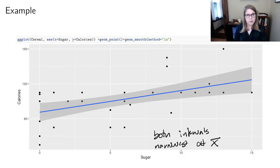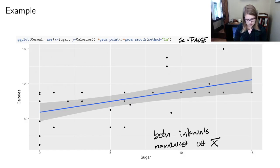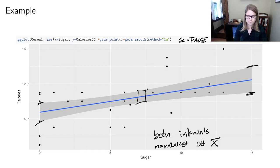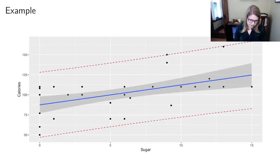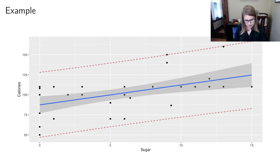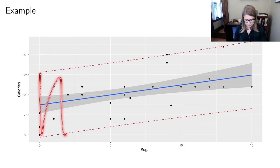The standard error bands in ggplot2 — which I've been turning off by setting SE equal to false — show the confidence interval. You can see it's narrowest around the mean of X, then gets wider at the edges. I also plotted the prediction interval as red dotted lines for you, though you don't need to know how to add those to your ggplot. The gray band in the middle is the confidence interval, and the red dotted lines are the prediction interval, which captures almost all of the data and has to be pretty wide to do so.